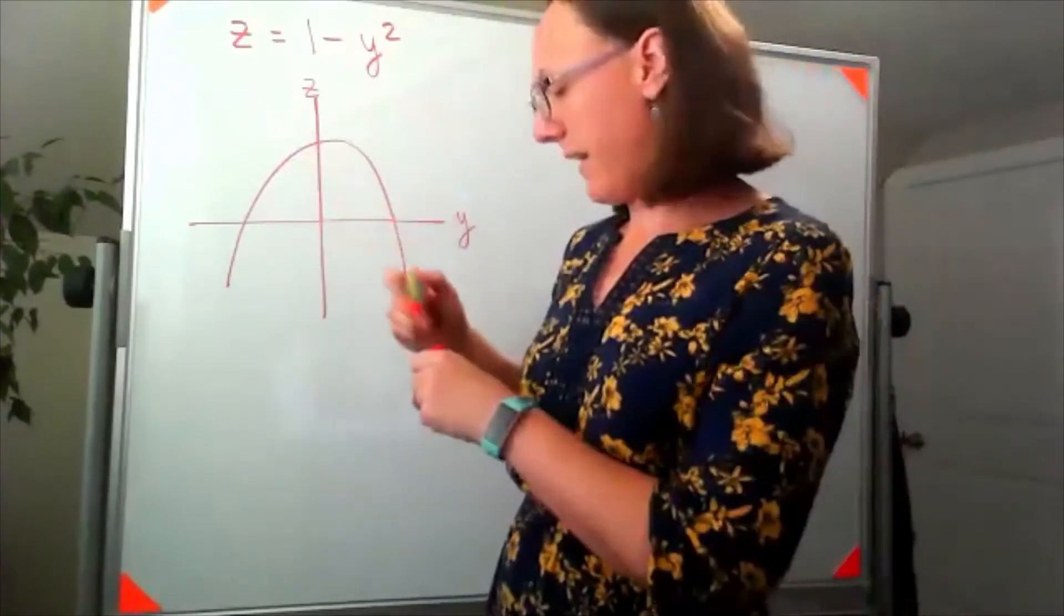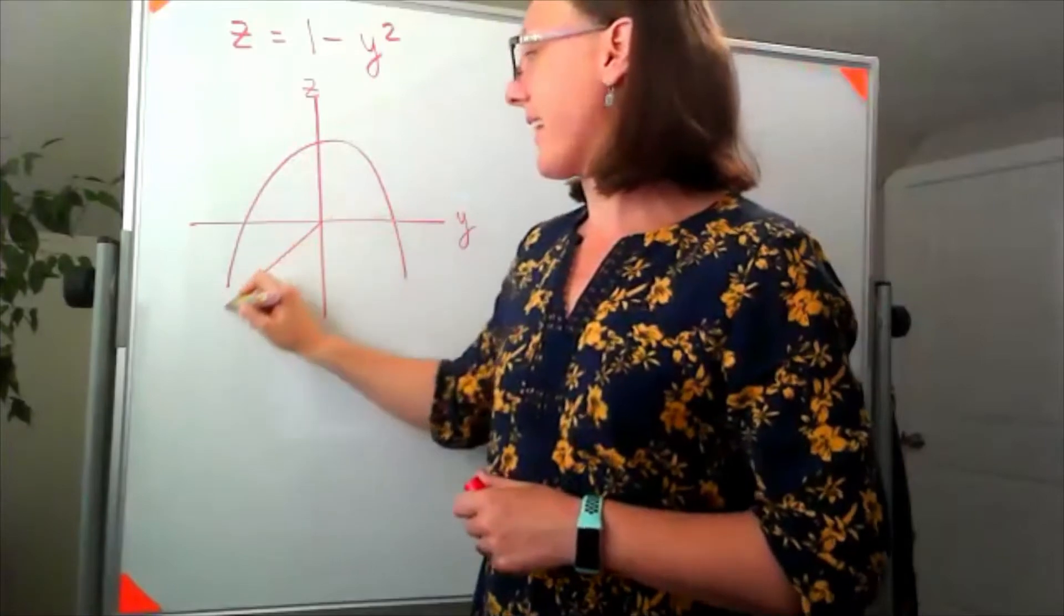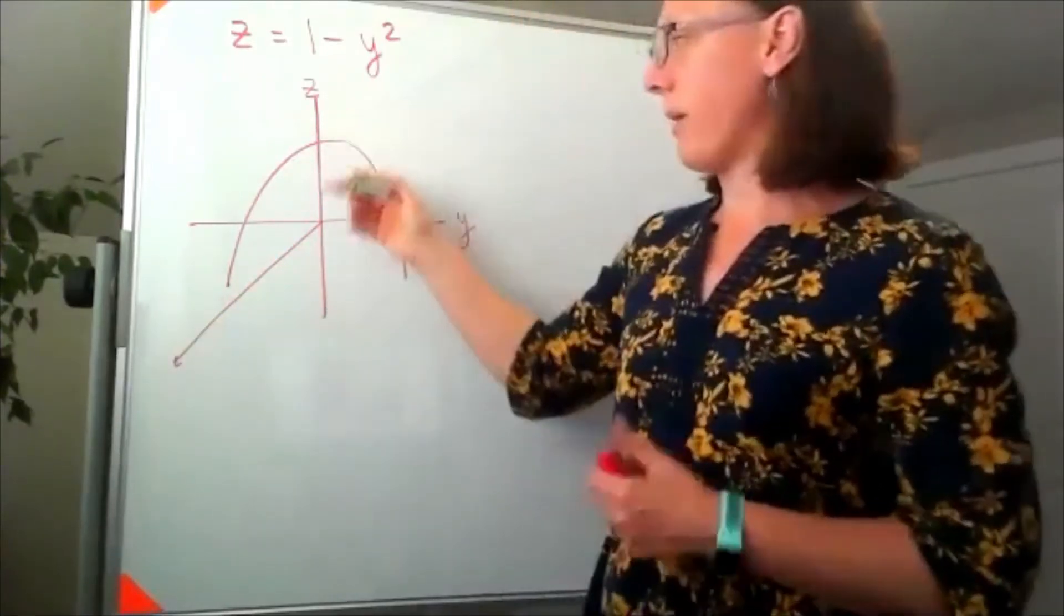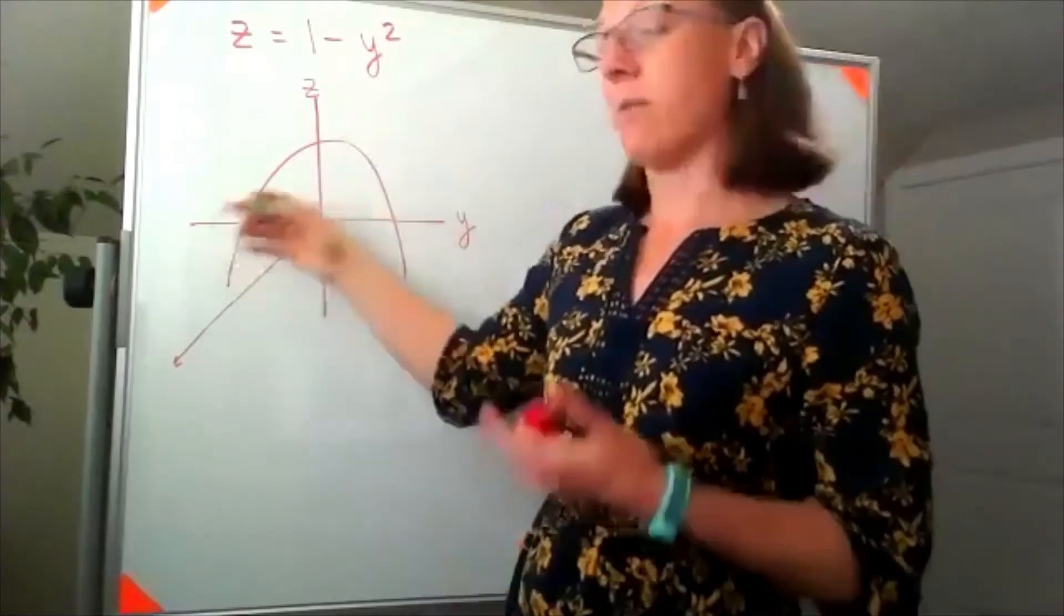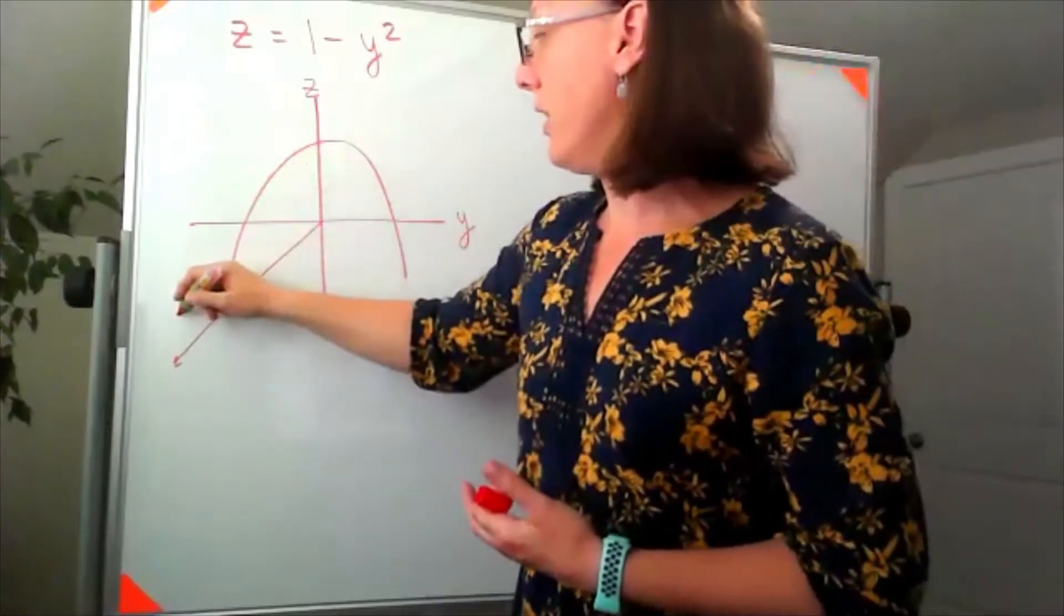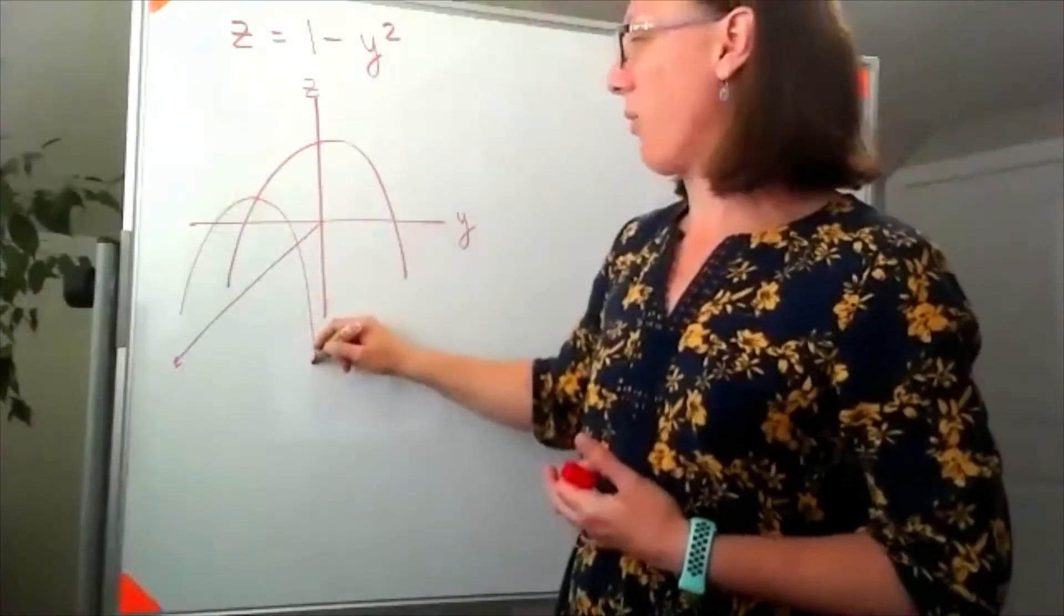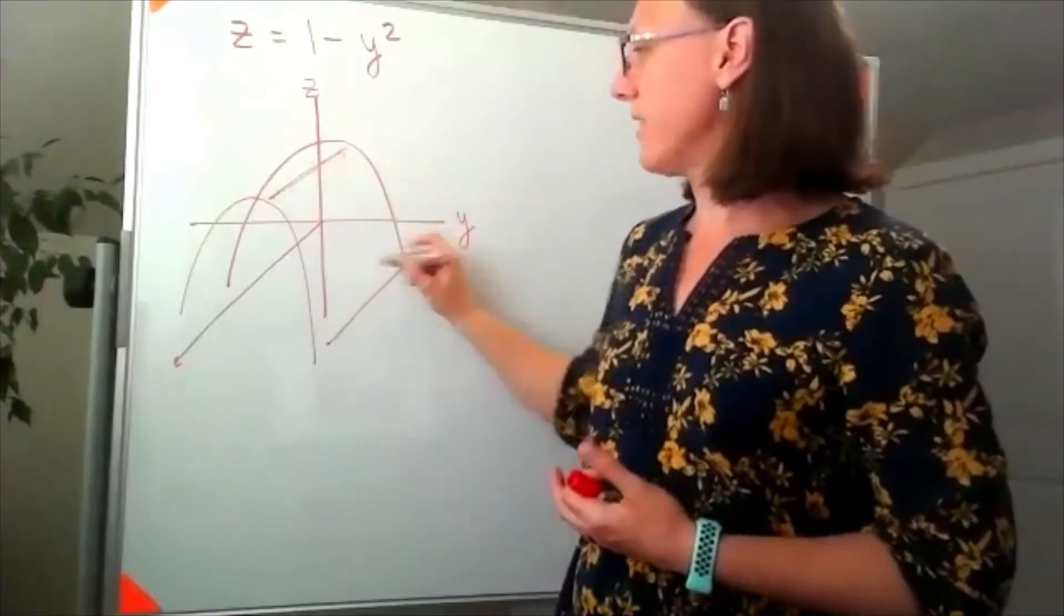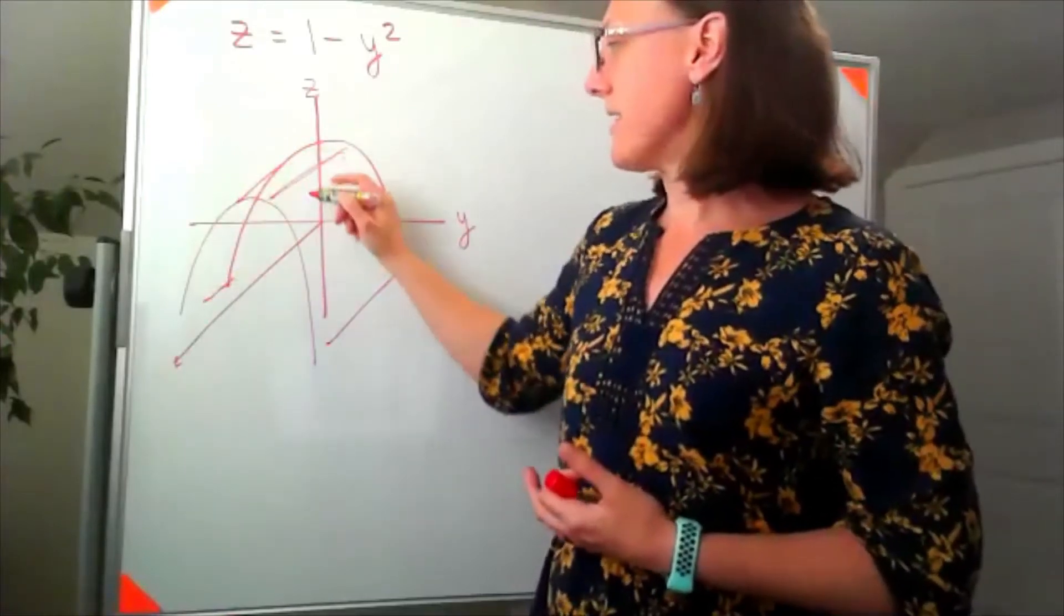I'm going to think about that X axis sticking out from the board and think about taking this parabola and repeating it, but further out, or we kind of represent that by further down. And then I'm kind of just going to connect these together and shade in a little bit to give it some depth.